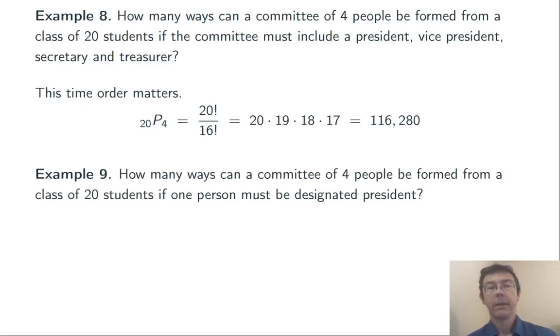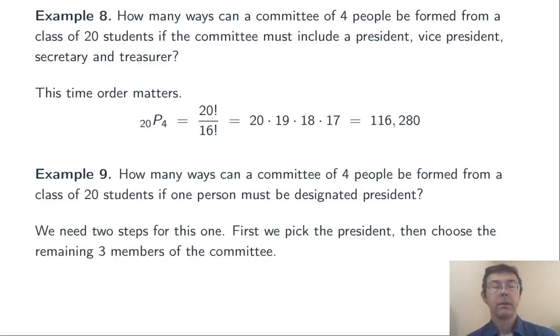One last example. How many ways can a committee of 4 people be formed from a class of 20 students if one person has to be designated president? This is a bit of a hybrid problem. So, we're going to need to do two steps on it. There's different ways that we could do this. Here's how I'm going to view it. First, we pick the president. There's 20 different ways we can do that. Then, choose the remaining three members of the committee.